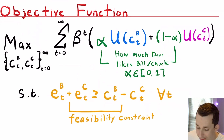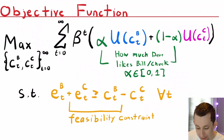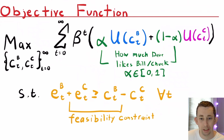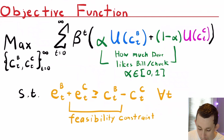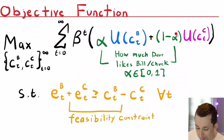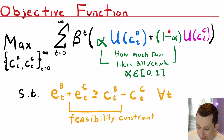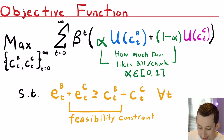Let's talk about the objective function that Dave is trying to solve when thinking about Pareto optimal allocations. This looks very similar to the Arrow-Debreu problem setup, except now we have alpha and one minus alpha. You can think of this alpha parameter as how much Dave likes Bill and Chuckles — alpha goes from zero to one. If alpha equals one, Dave only cares about Bill. If alpha equals zero, Dave only cares about Chuckles. If alpha equals one-half, Dave cares about both utilities equally.